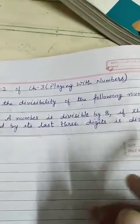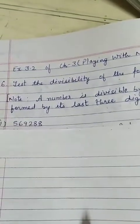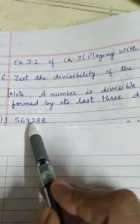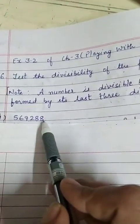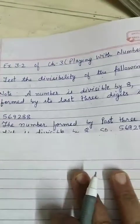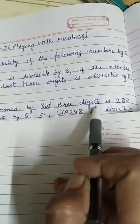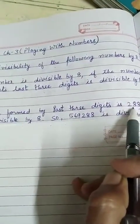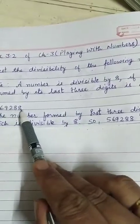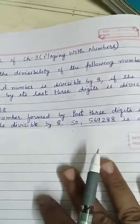So, let's start the sum. The first part is, number is given to you, 569,288. Now, see that the number formed by last three digits is 288. The last three digits are 288.